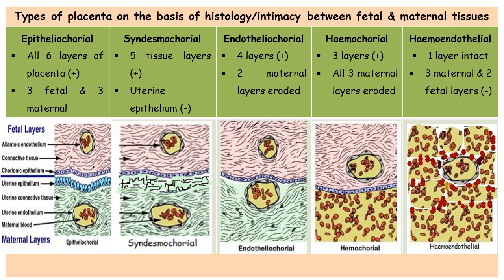The next type is endotheliochorial placenta. In this case, both the uterine epithelium and uterine connective tissue are eroded by the chorionic villi. Only four layers remain — three from the fetal side and one from the maternal side, which is only the uterine endothelium. This type of placenta is mostly found in carnivores, tree shrews, moles, etc.